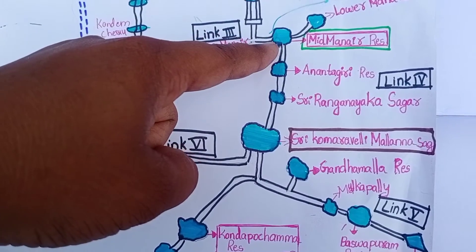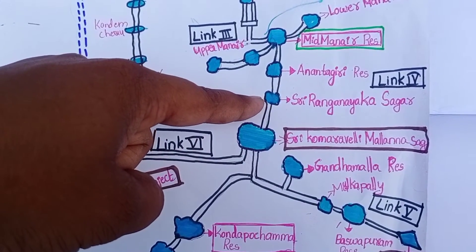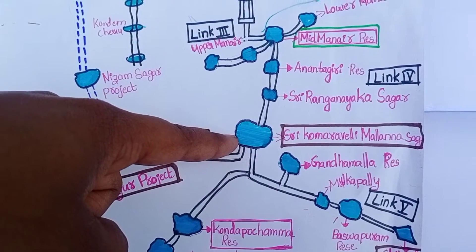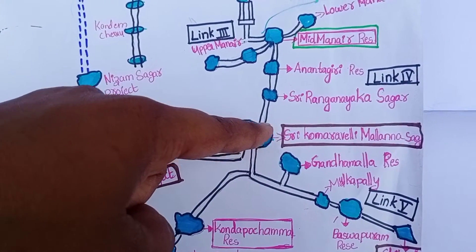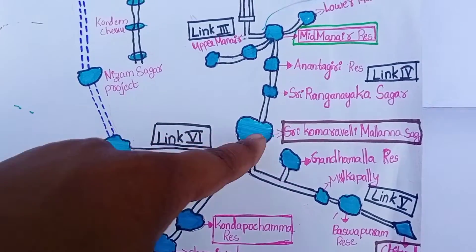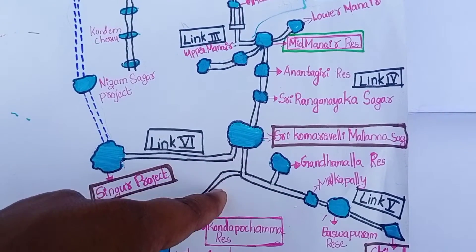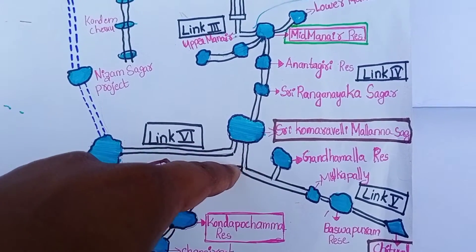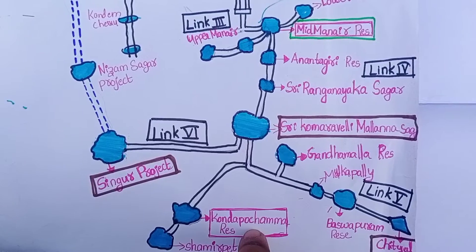From Midmaner, water flows to Anandagiri Reservoir, then to Shreeranganayakasagar, which is made into 3 divisions — left side and right side. On the right side, 2 divisions are further split into 3, and through this canal, water reaches Kondopochamma Reservoir.